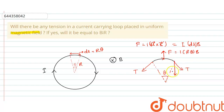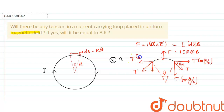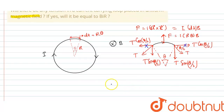Since the angle is θ, each half is θ/2. The tension components are T·cos(θ/2) and T·sin(θ/2) on each side. The two T·cos(θ/2) components cancel, and the two T·sin(θ/2) components add up, giving 2T·sin(θ/2) in the downward direction, balanced by i·R·θ·B.